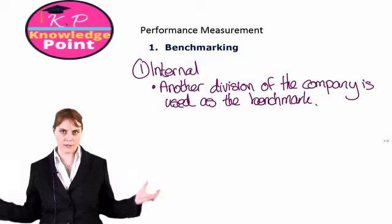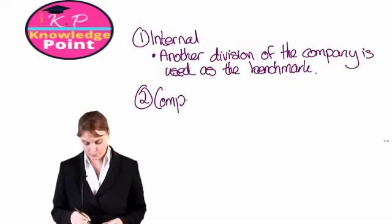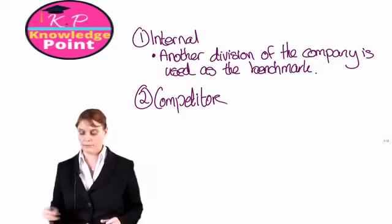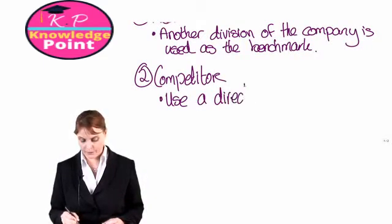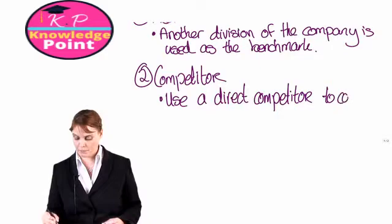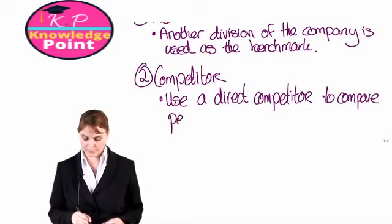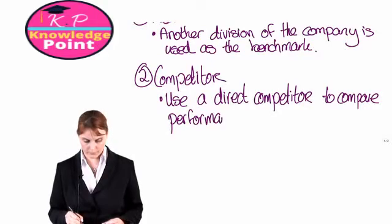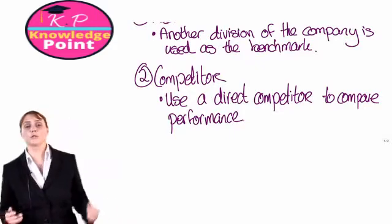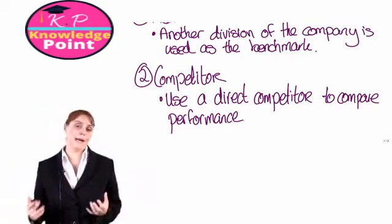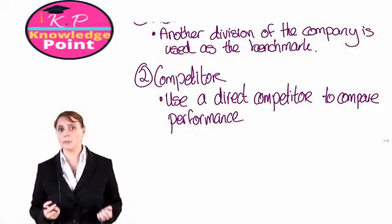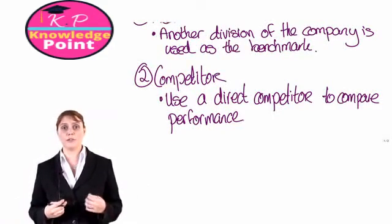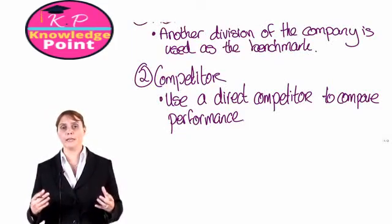The other way in which we can benchmark is competitor benchmarking. This is where we use a direct competitor to compare performance. For example, if you are running Tesco's, you may use competitor benchmarking by comparing your performance to a company like Sainsbury's. Because Tesco's and Sainsbury's are direct competitors, this gives you a good indication of how you are performing in relation to the marketplace.